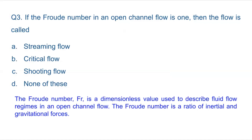The Froude number is a ratio of inertial forces to gravitational forces — both forces, so the ratio is dimensionless. When the Froude number is 1, the flow is critical flow. If Fr is less than 1, it is subcritical flow; if Fr is greater than 1, it is supercritical flow. Streaming flow means smooth flow and shooting flow means fast/turbulent flow. When Fr equals 1, the flow is critical flow — answer is B.